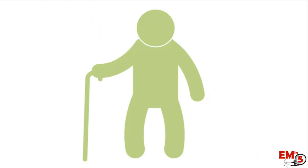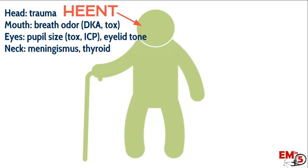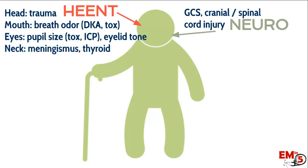Everything you find on your exam is going to be a clue to what's going on, so start at the top. Look at their head for signs of trauma. In addition to assessing the ABCs and airway, look for signs of toxicity — maybe they smell like alcohol or have a fruity odor of DKA. Get a pupillary exam, see if they have a large thyroid or a stiff neck. On your neuro exam, get a GCS and look for any focal deficits or signs of cord injury.